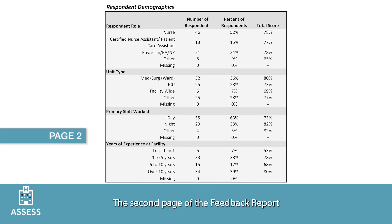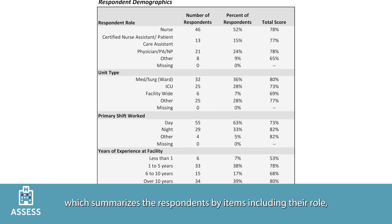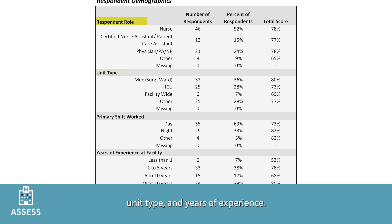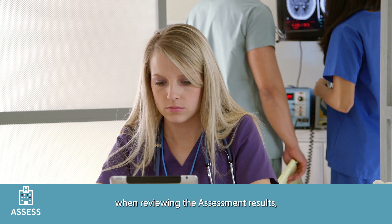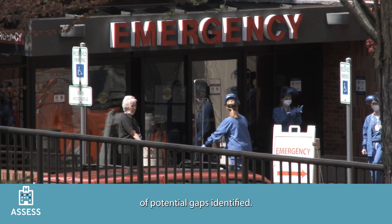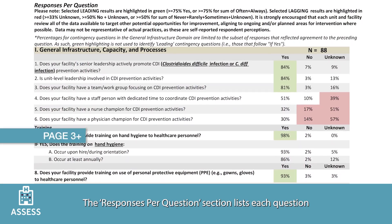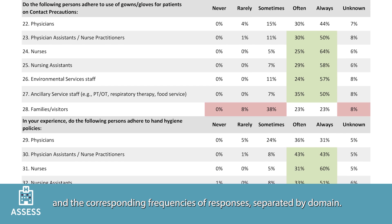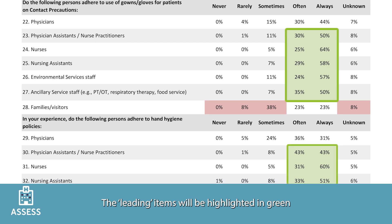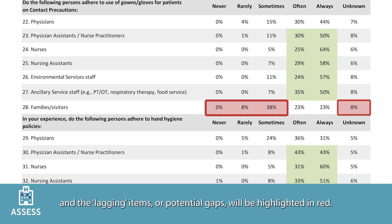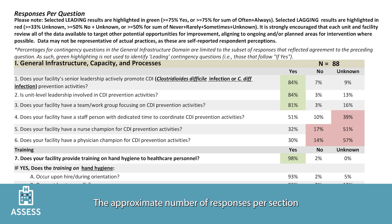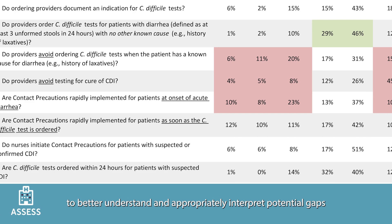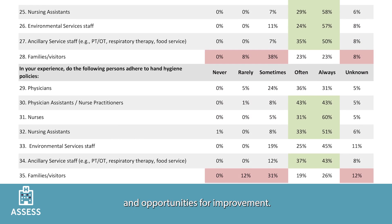The second page of the feedback report displays the respondent demographics table, which summarizes respondents by role, unit type, and years of experience. This information is helpful when reviewing the assessment results, as it can provide insight into the interpretation of potential gaps identified. The responses per question section lists each question from the TAP facility assessment and the corresponding frequencies of responses, separated by domain. Leading items are highlighted in green and lagging items or potential gaps are highlighted in red.